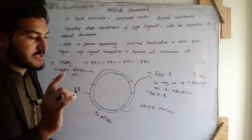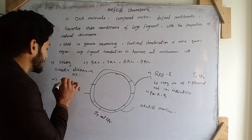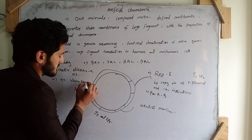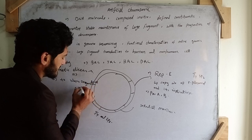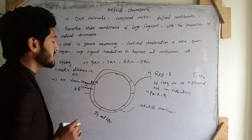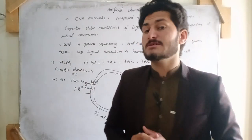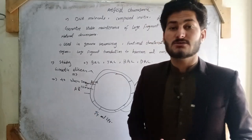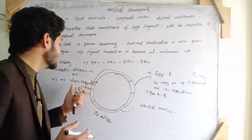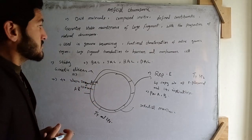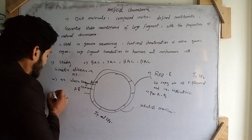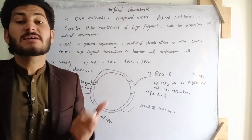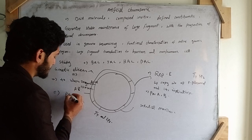The second application is to study neurodegenerative diseases. We can study neurodegenerative diseases like Alzheimer's disease, Parkinson's disease, and other diseases related to our nervous system using the Bacterial Artificial Chromosome.